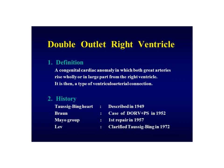They described it in 1949. Braun was the first to describe a double outlet right ventricle with pulmonary stenosis in 1952. The first repair was performed at Mayo Clinic in 1957. Dr. Lev, whom I actually worked with briefly, clarified the Taussig-Bing anomaly in 1972. He was near the end of his career when I worked with him, but he was just brilliant.